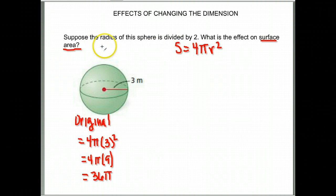They want to know what would happen if we took the radius and divided it by 2. So if we took this radius and divided it by 2, our radius is now 1.5. 3 divided by 2 is 1.5. Let's find that surface area.